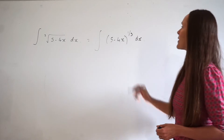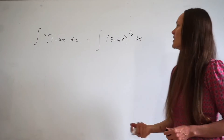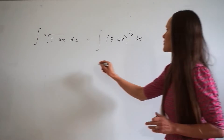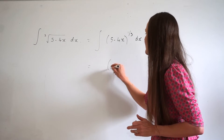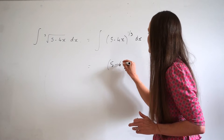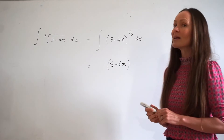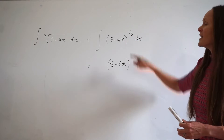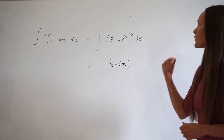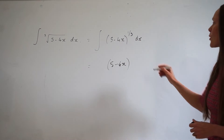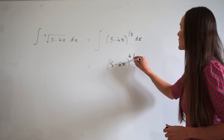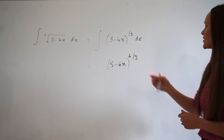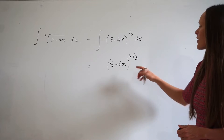It's exactly the same process — I'm just writing the question in power form. The part inside the brackets remains the same: 5 minus 4x. The first step is to increase the power by 1, so a third plus 1 is 1 and a third, which as an improper fraction is 4 thirds. Step 2 is to divide by that new power, so we divide by 4 thirds.